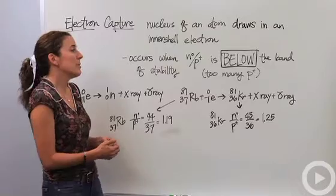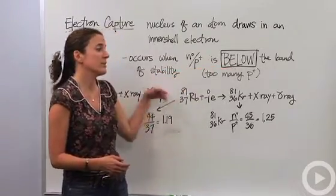So when does this happen? This happens when the neutron to proton ratio is too low or below the band of stability.